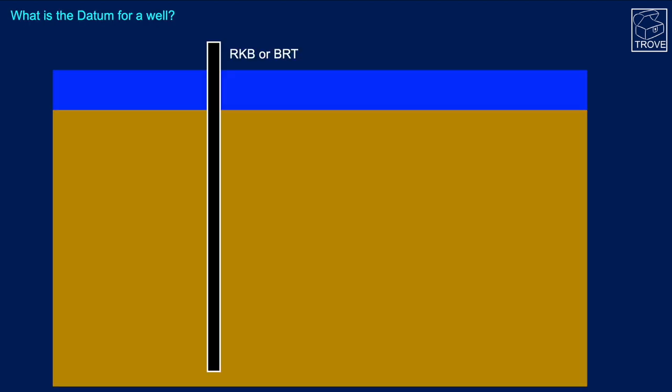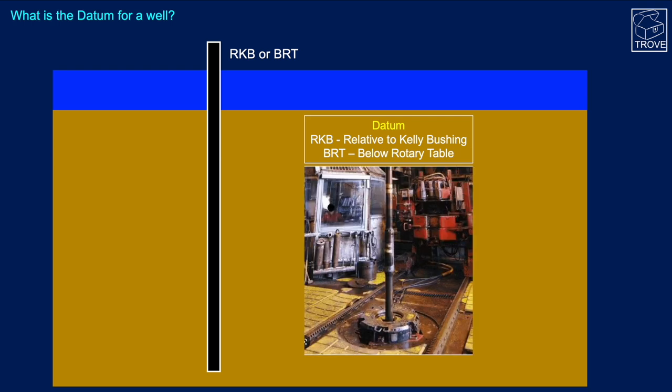What is the datum for a well? Commonly, depths are referred to as RKB or BRT — this refers to the datum. RKB is relative to Kelly Bushing; BRT is below rotary table.